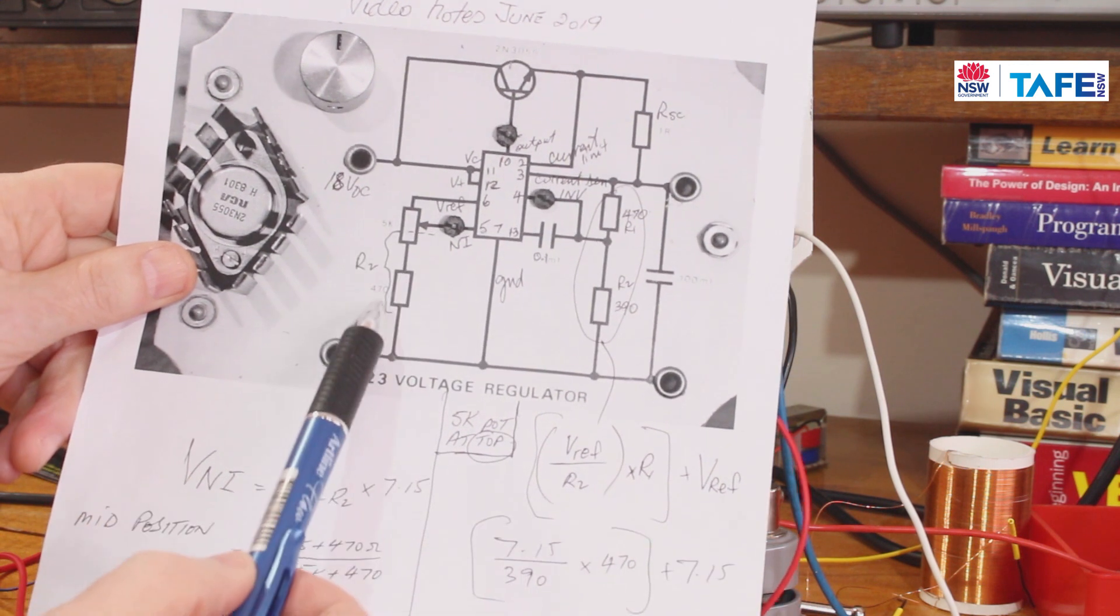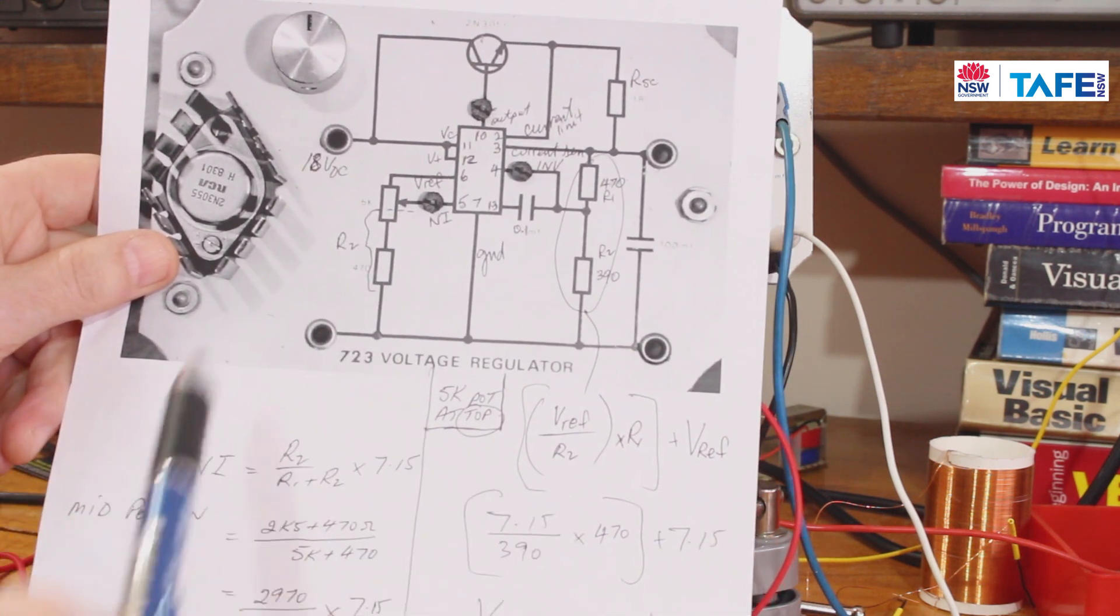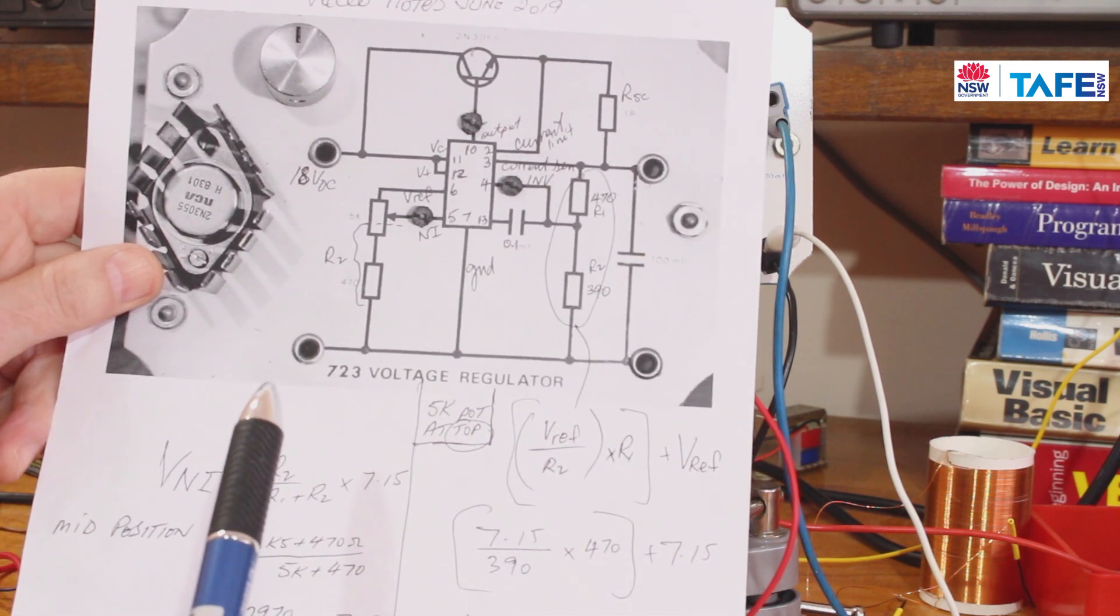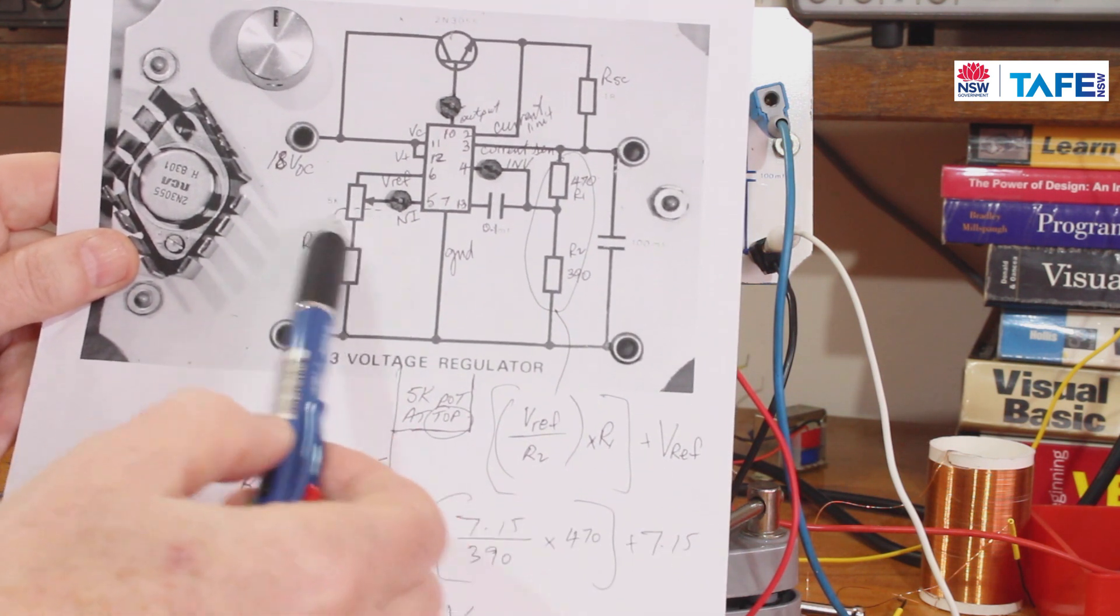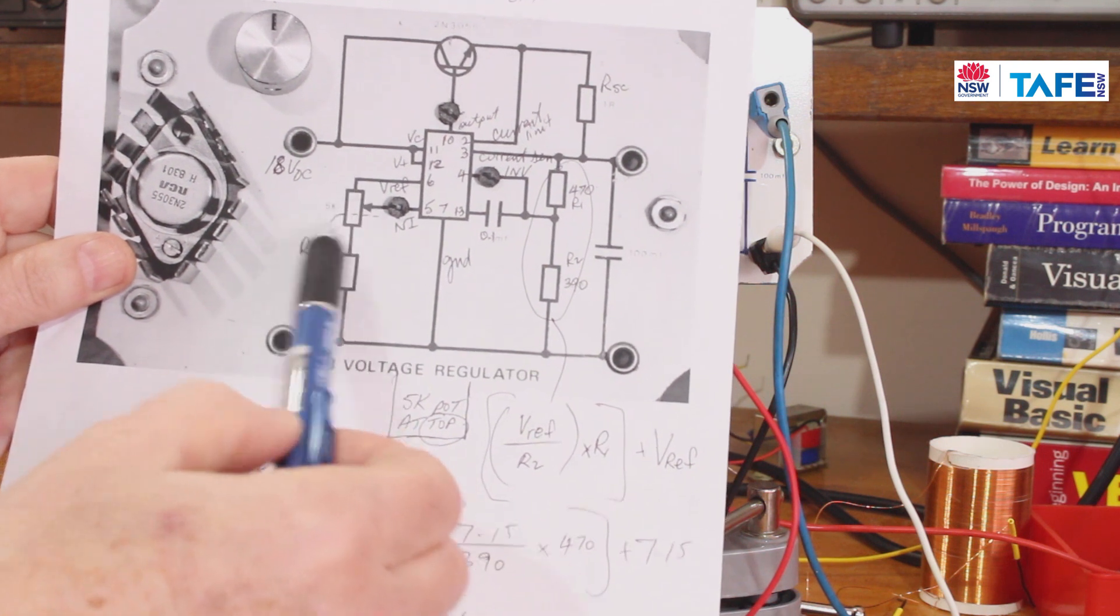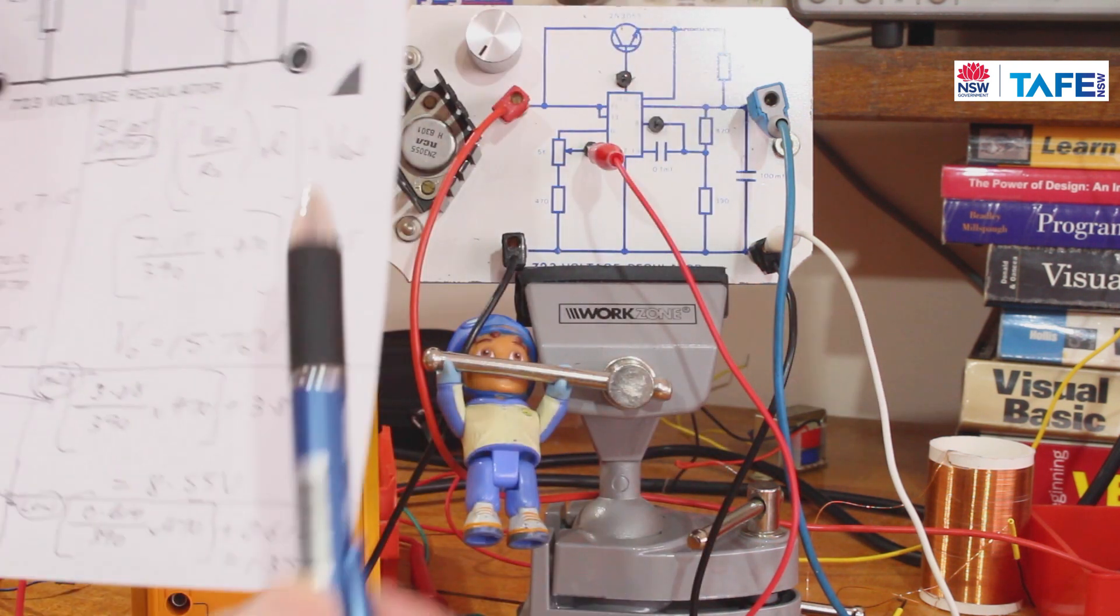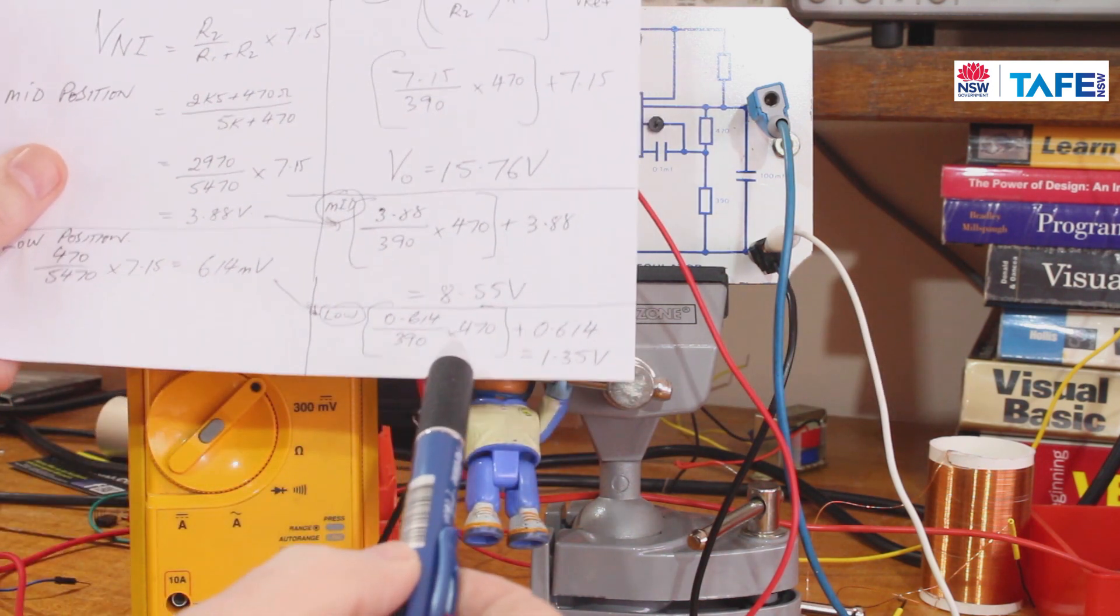So always check the value of the components in a circuit, especially an old board like this that was made about 30 years ago. The parts have probably drifted. Maybe that was a very poor tolerance pot in the first place, down at the bottom value.